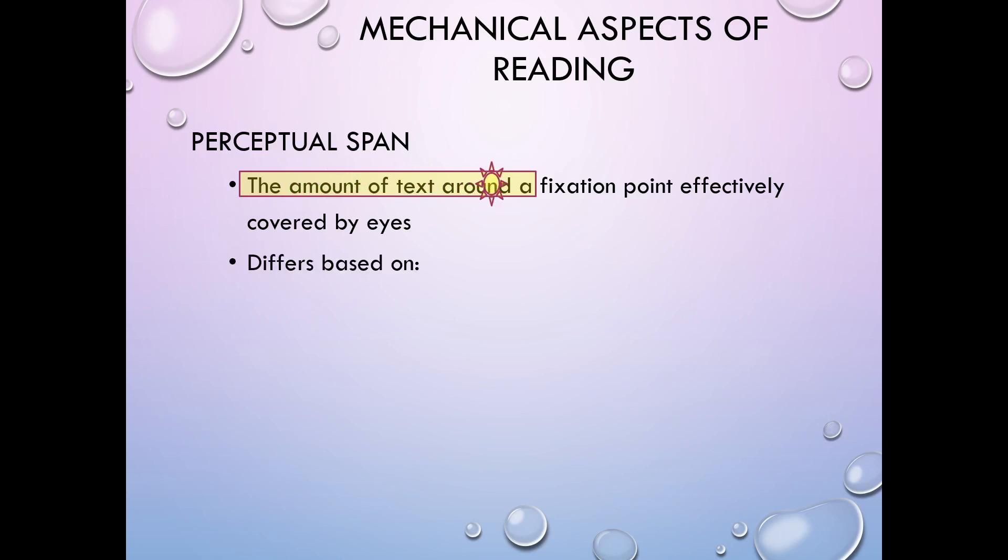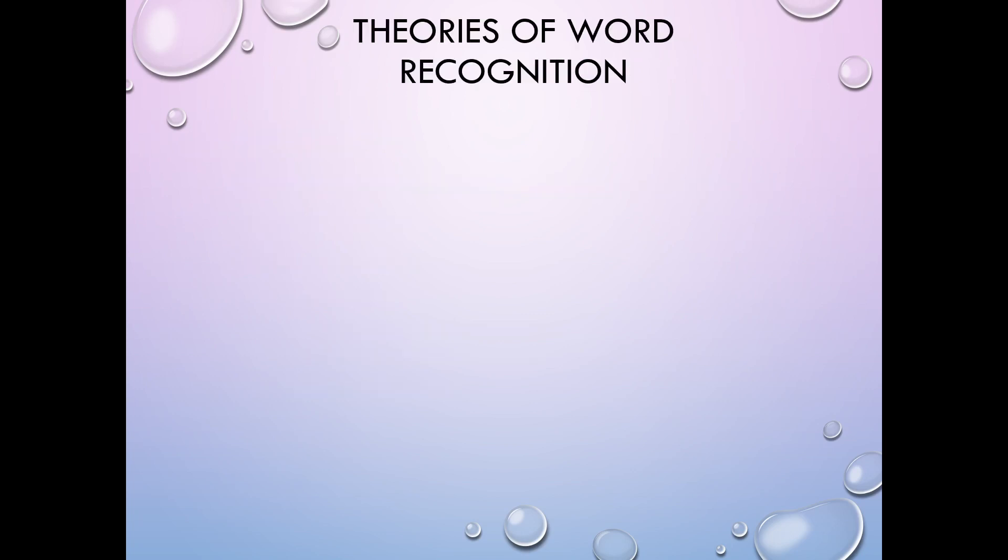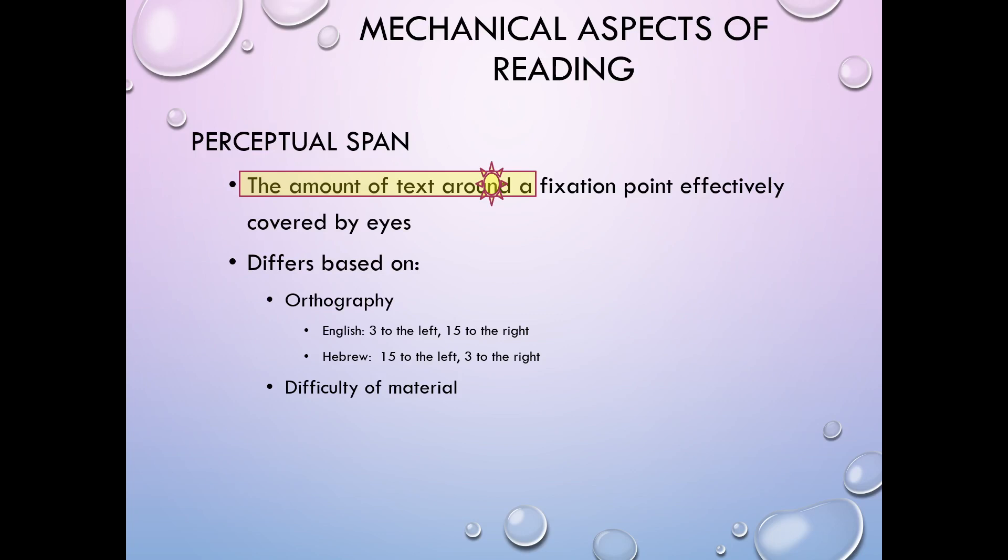Perceptual span can differ based on orthography. For English writing, which is what orthography means, usually your perceptual span will encompass about three letters to the left and about 15 to the right. If you read the other direction, like in Hebrew, it's the same number of spaces but it's going the other direction because you're reading right to left. So part of it is the orthography, like how you read. Part of it is the difficulty of the material. The example that I gave you here has pretty simple words in that first part that I've got the box around. Those are really common words. And so simple words, you're going to have a broader kind of perceptual span because you're going to be able to make a lot of guesses about that. All right.